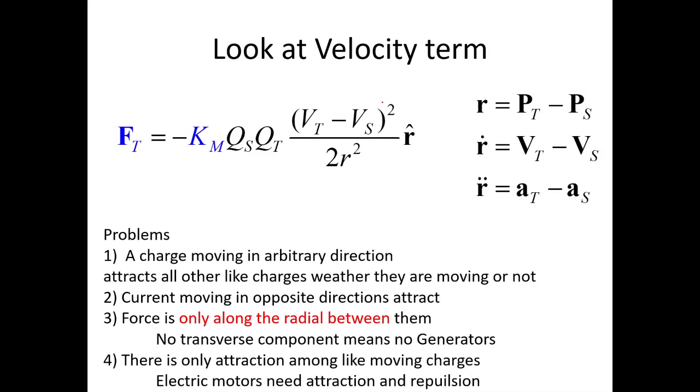Okay, so let's look at the velocity term, the magnetism term. Because these velocities are squared, then basically a charge moving in any arbitrary direction attracts all other like charges. And there's only attraction in this model. In magnetism, you need attraction and repulsion. I'm talking about like charges, in other words, current in wires. So if you have electrons moving in a wire, it doesn't matter which way those electrons move, there's only ever going to be attraction unless their wires are moving exactly in the same direction, then there's nothing.